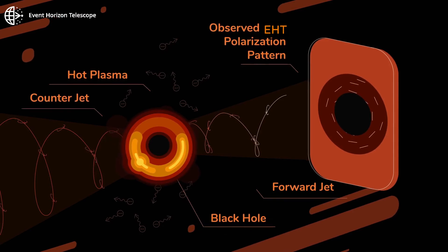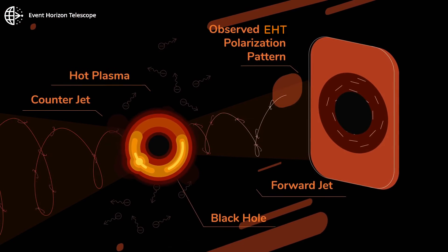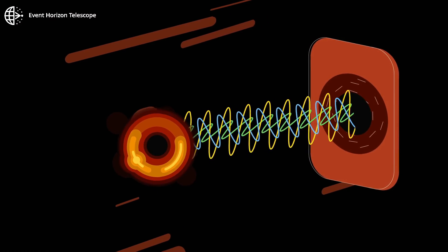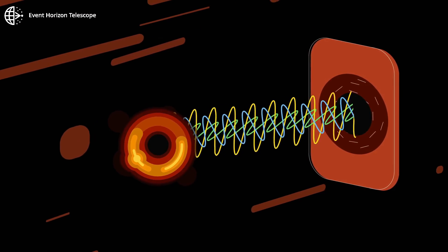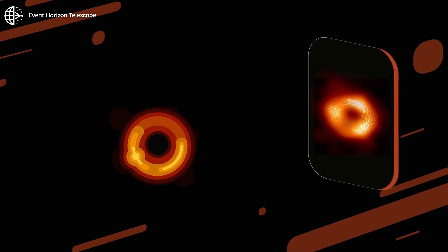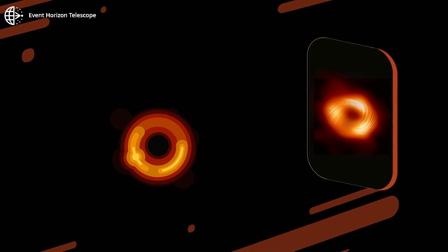The polarized light rays that manage to escape travel to a distant camera. The intensity of the light rays and their direction are what we observe with the Event Horizon Telescope. Using this knowledge, we can map out the magnetic fields that surround black holes.